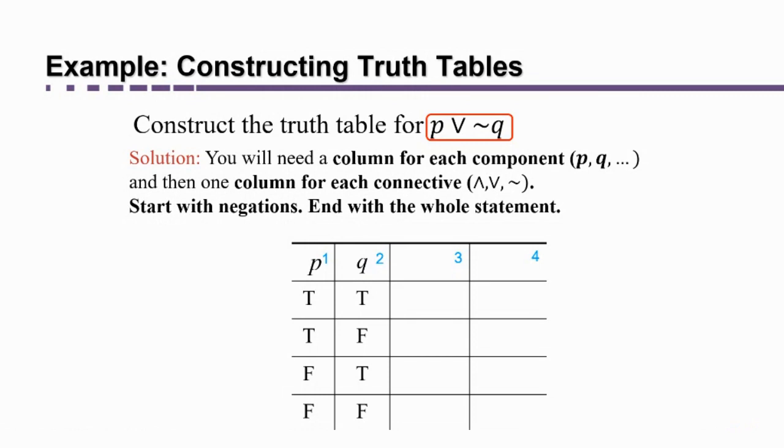Then in the third column, I've labeled with a three, which of the connectives in this statement, P or not Q, should I analyze next? Should I analyze the or or the negation? Negation. Yes, negation of individual components comes first. So the next column, column three, we're going to fill in with negation Q because we would focus in on that statement first.